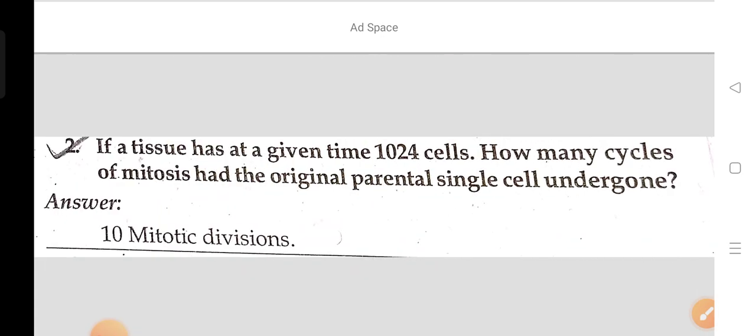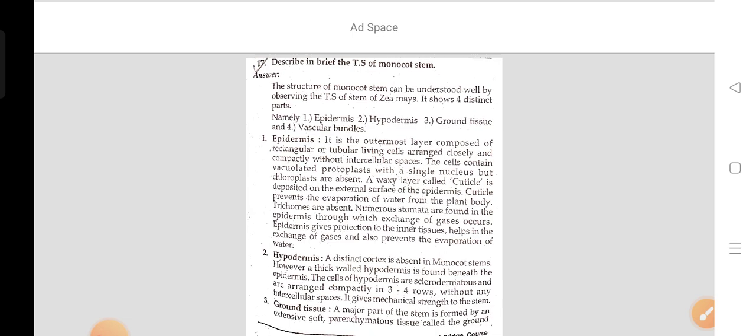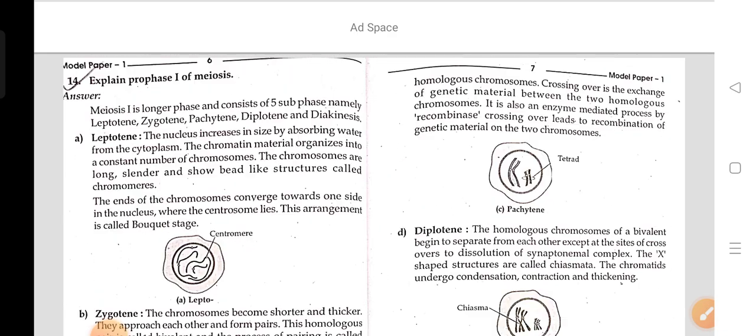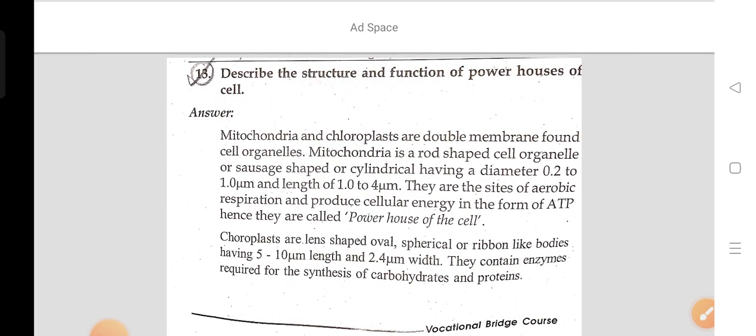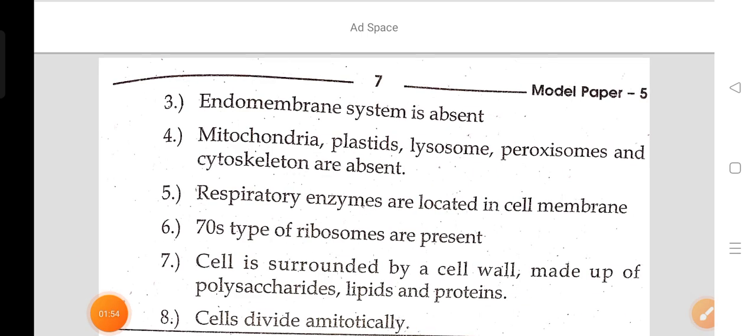If a tissue has at a given time one thousand cells, how many cycles of mitosis had the original parental single cell undergone? Describe the different populations. Explain the process of meiosis. Describe the structure and function of the cell.